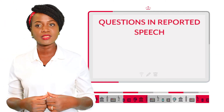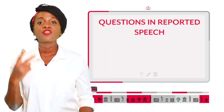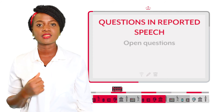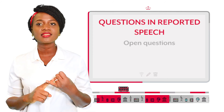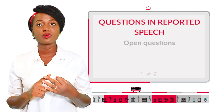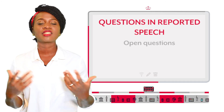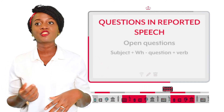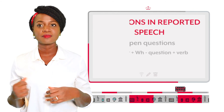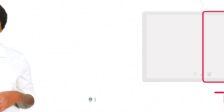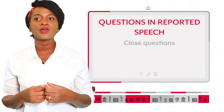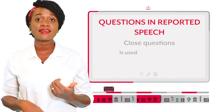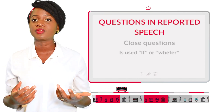Questions in reported speech — there are two types. Open questions, like 'what', 'where', 'who', are usually structured as subject plus wh-question plus verb. While in closed questions — questions answered with yes or no — 'if' or 'whether' is used.